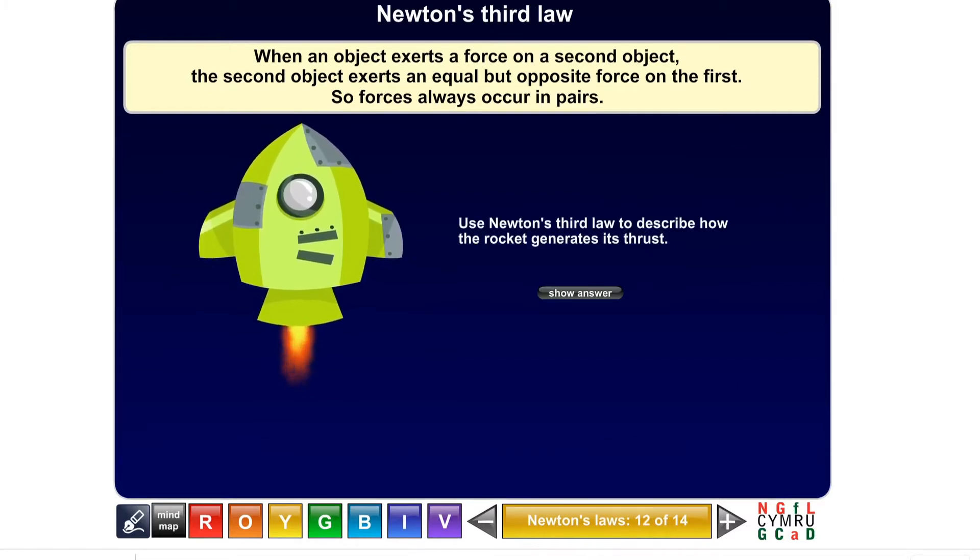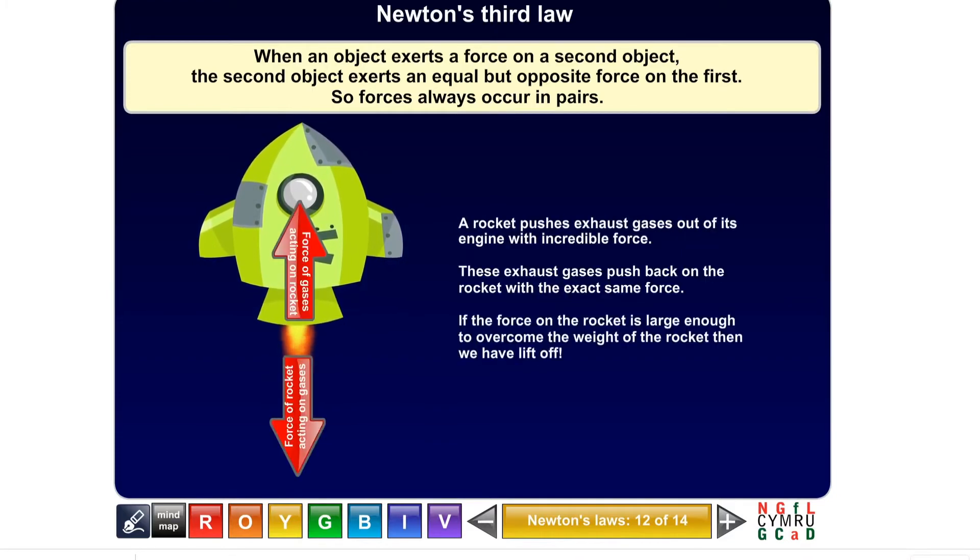We talked about balloons and rockets earlier. Just like a balloon pushing air one side and being pushed in the opposite direction. What we've got here is Newton's third law describing how the rocket generates its thrust. So the answer is there: a rocket pushes exhaust gases out of the engine with incredible force, so that's downwards. These exhaust gases push back on the rocket with exactly the same force. If the force on the rocket is large enough to overcome the weight of the rocket, then we have lift off.